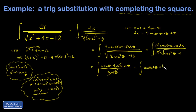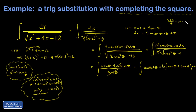The integral of secant is one that really should be memorized because the derivation is not simple. So I end up with the natural log of the absolute value of secant plus tangent. I'm not done until I get an answer in terms of x, so I've got to transform back, which requires solving for theta. Going back to my substitution: x plus 2 over 4 is equal to secant theta, so theta is the inverse secant of (x+2) over 4.